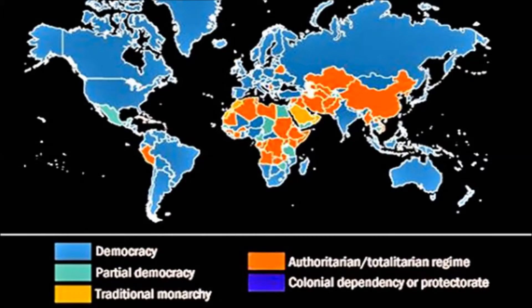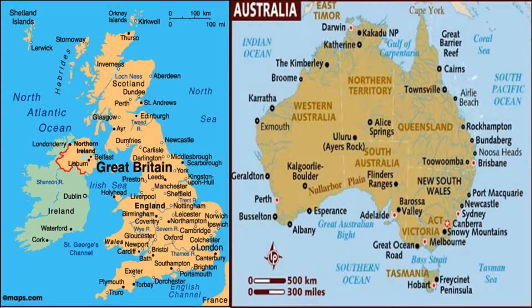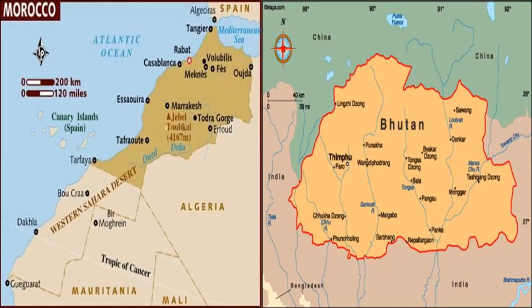Today, many countries are following different governments in their nations. Countries like Saudi Arabia, Qatar, and Oman follow a complete monarchy system. England, Australia, Morocco, and Bhutan also follow monarchy, but in these countries they follow constitutional monarchy.